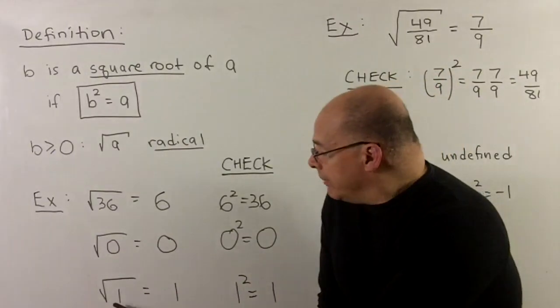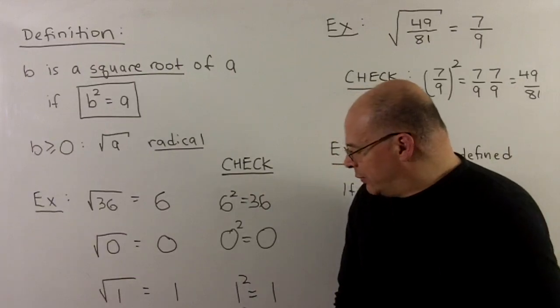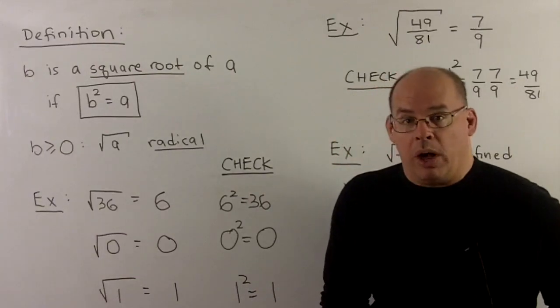Square root of one, that's going to be one. Likewise, because if we take one and square it, a one comes out.